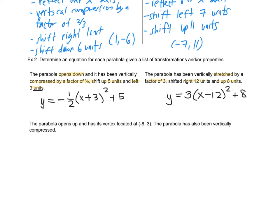The parabola has been vertically stretched by a factor of 3, shifts right 12 and up 8 units. Vertically stretched means the a value is 3. Going right 12 means x minus 12 squared, and up 8 means plus 8. For the last one, the parabola opens up so no reflection. The vertex is at negative 8, 3, so they gave us the h and k values. The parabola has been vertically compressed, so choose any a value between 0 and 1 — say one half. Since the vertex is at negative 8, write x plus 8, and then plus 3. Everything comes from vertex form, and remember good, proper terminology and communication.